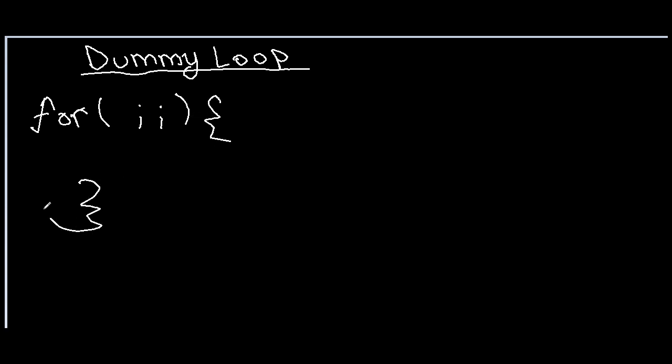and leave this blank. So if you see what this is, basically there's no initialization, there's no test, there's no increment, so it's just a loop. It'll keep on running forever and whatever code you put inside this, it'll keep on going on and on. So if I were to write SOPLN hi, it would just keep on printing hi.